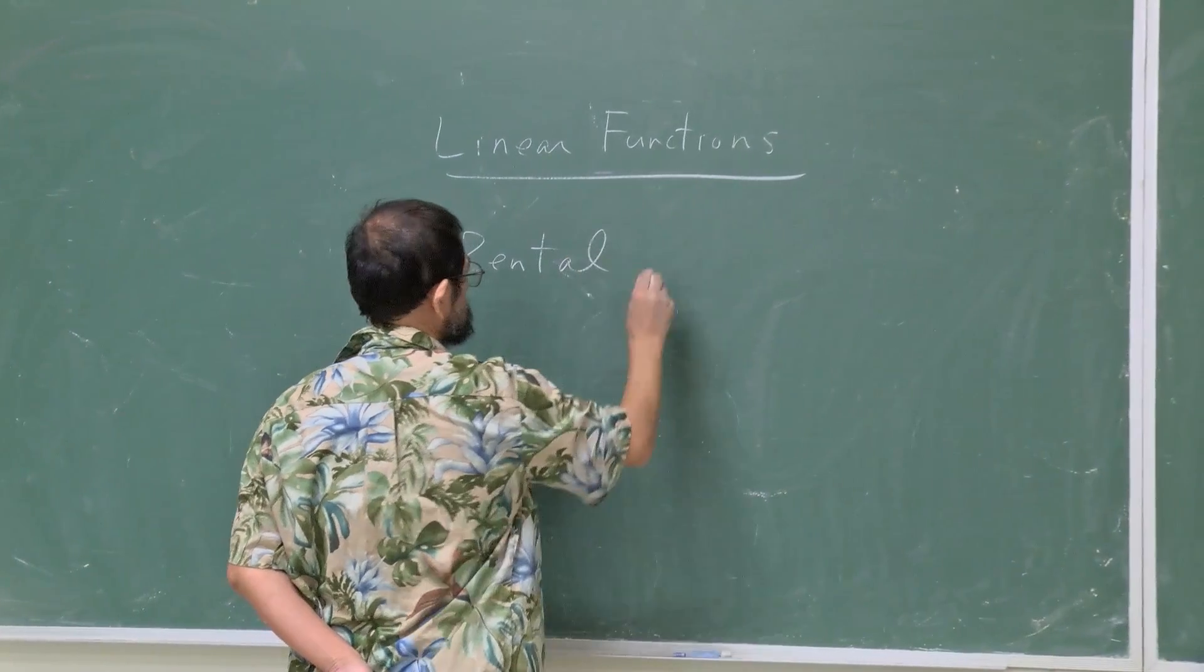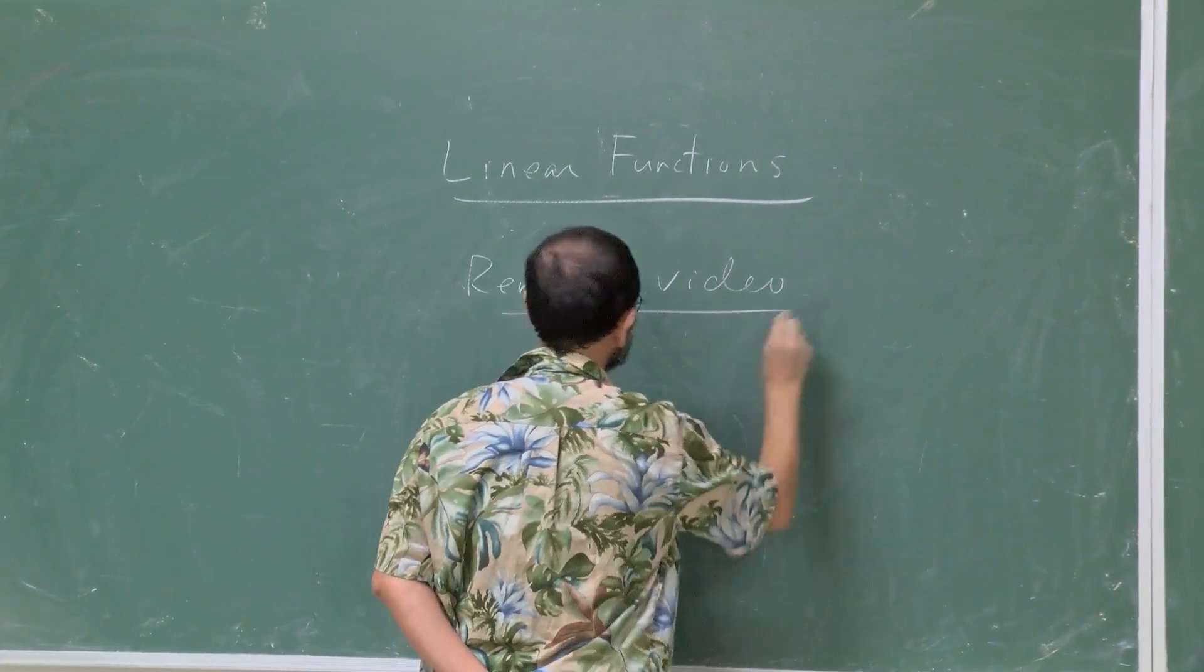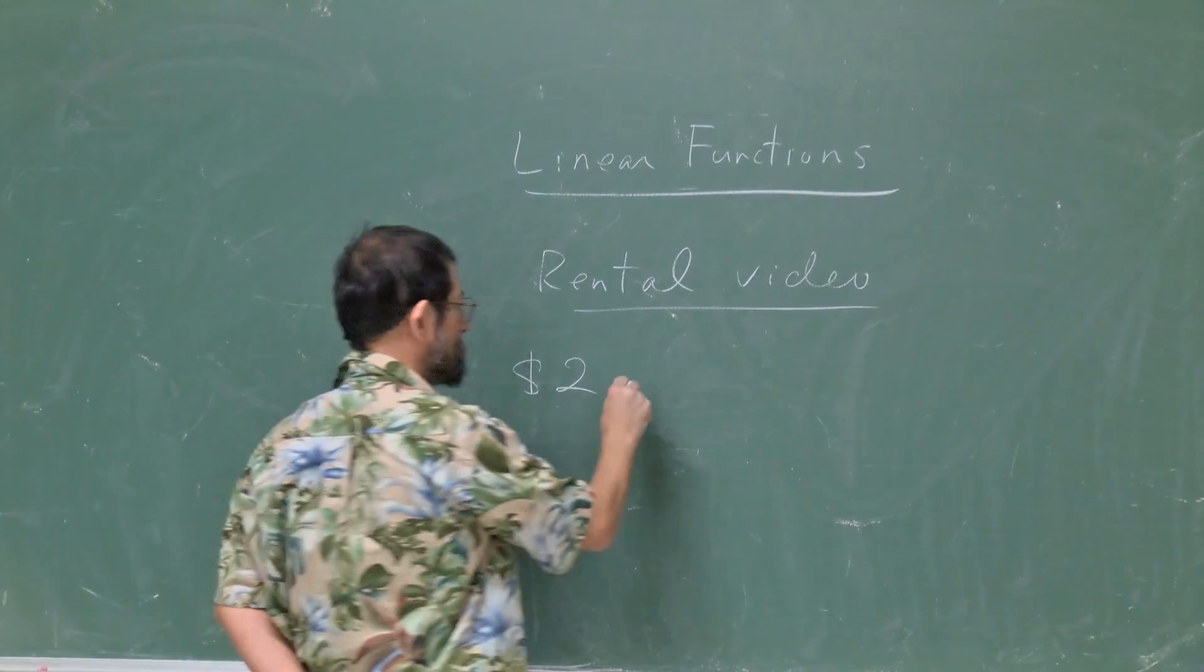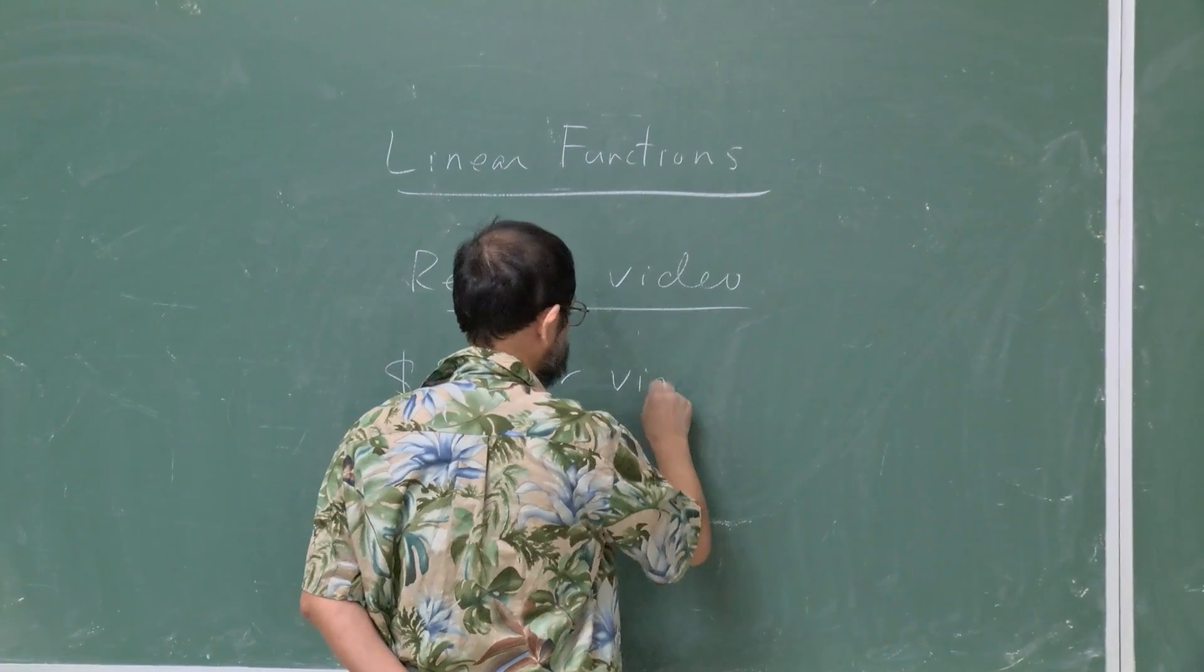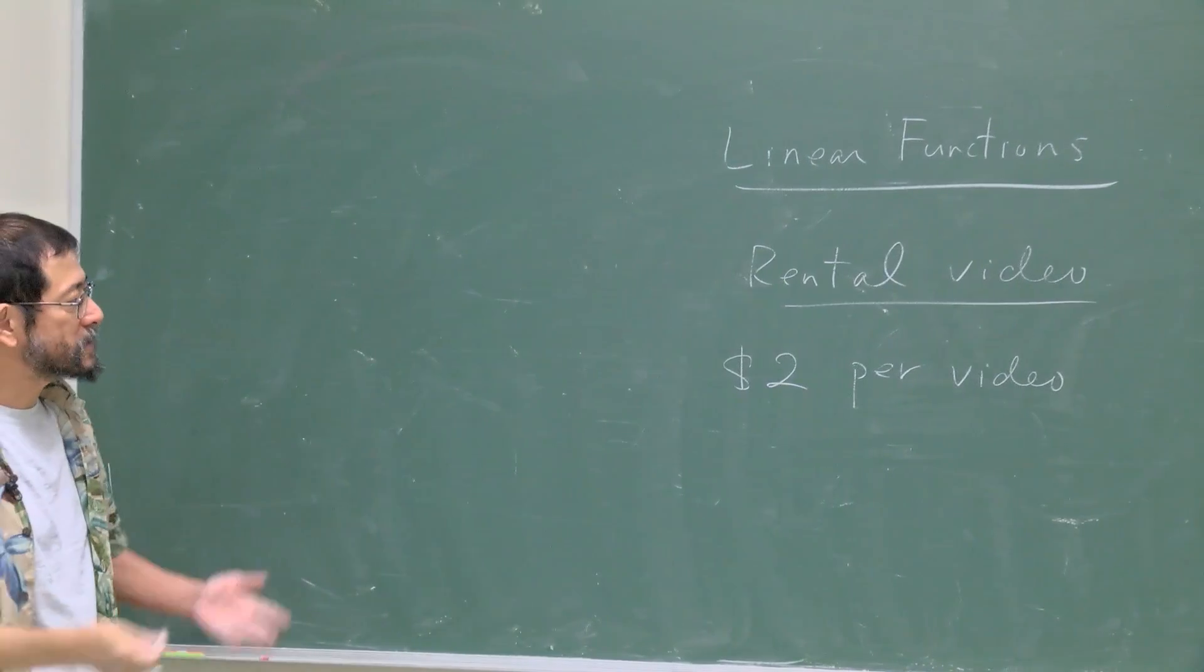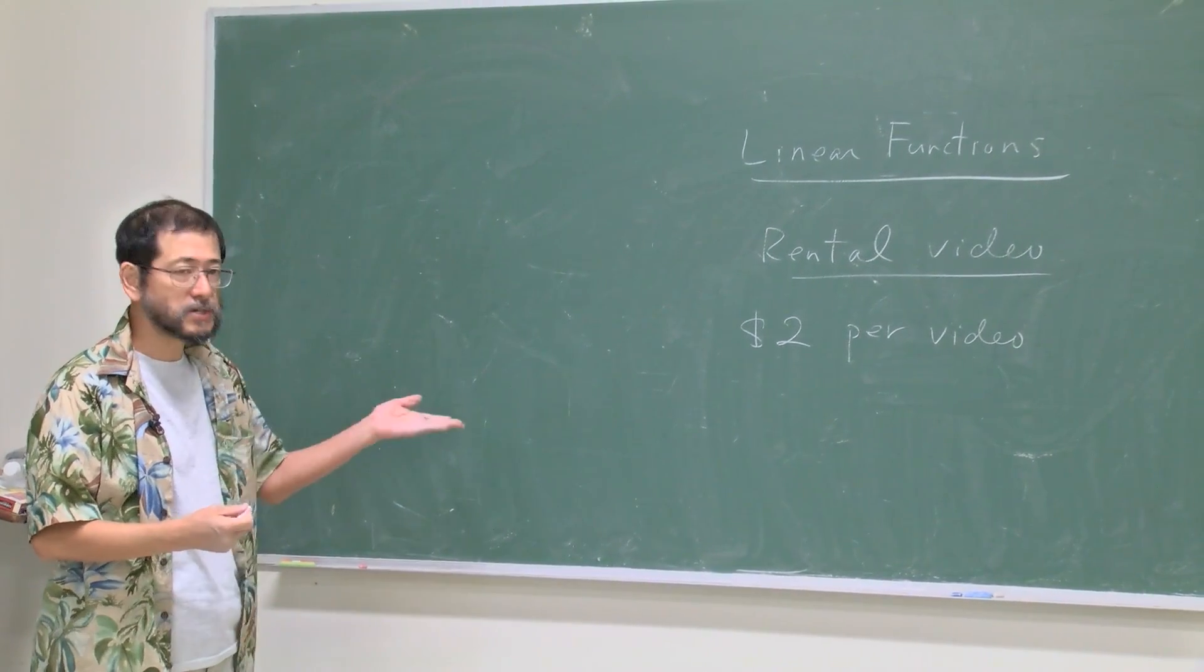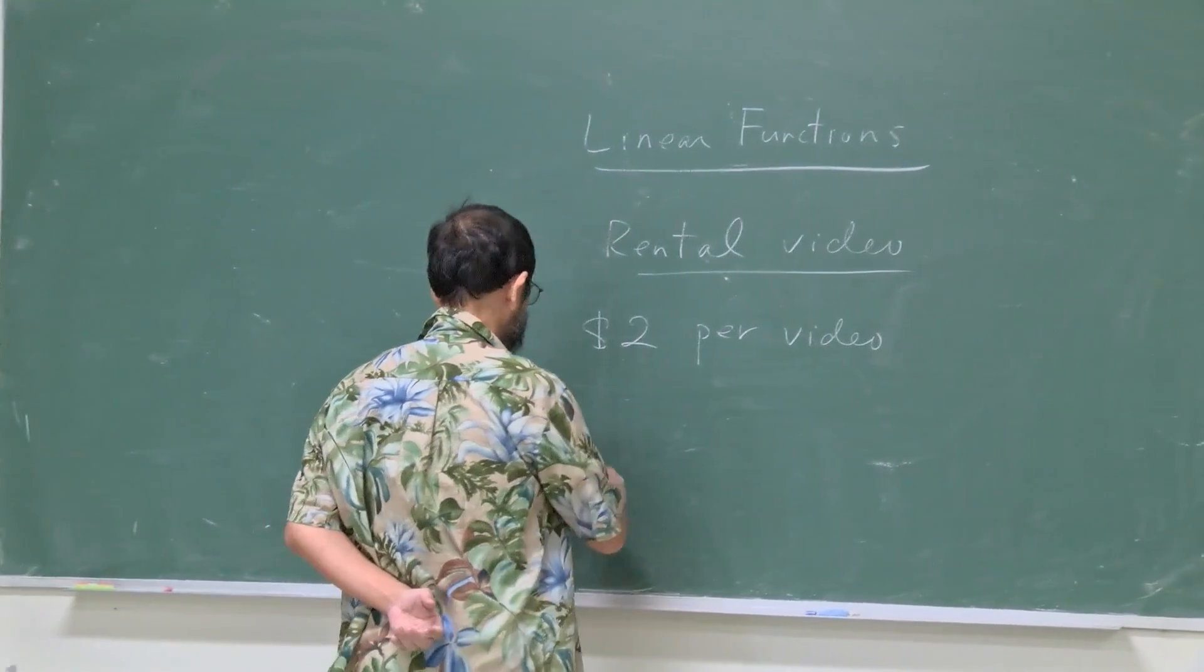Let's look at the price for a rental video store. For example, let's say you have to pay $2 to rent each video. So $2 per video. In this situation, we can consider the number of videos as an input and the price you pay as the output.